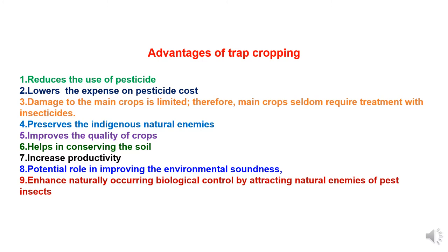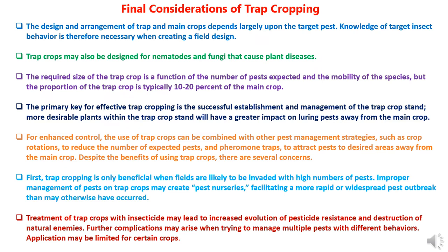Advantages of trap cropping: Trap cropping reduces the use of pesticides and lowers the expense of pesticide costs. Damage to the main crop is limited, so main crops seldom require treatment with insecticides. Trap cropping preserves indigenous natural enemies and improves crop quality. It helps in conserving soil, increasing productivity, and has potential in improving environmental soundness. Additionally, trap cropping enhances naturally occurring biological control by attracting natural enemies of pest insects.